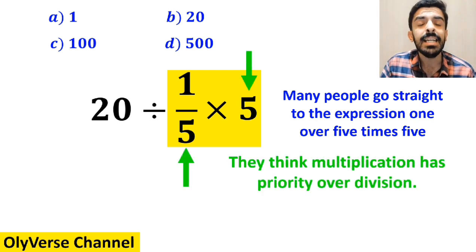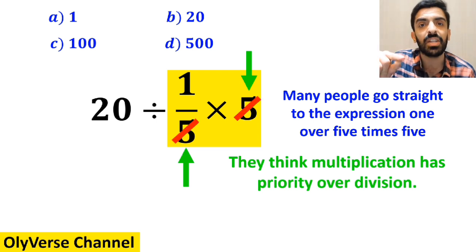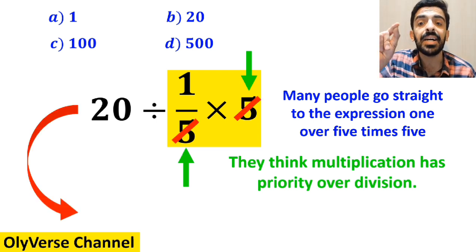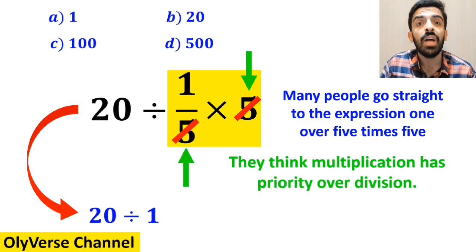And they say it's easy to simplify the 5 with the 5 in the denominator, and write this expression as 20 divided by 1, which finally gives them the answer 20.